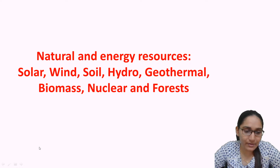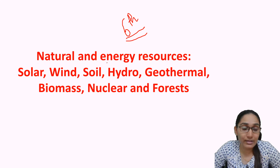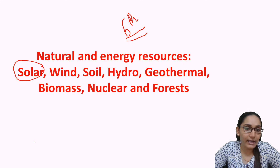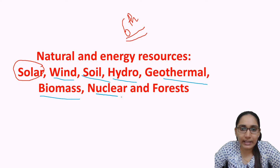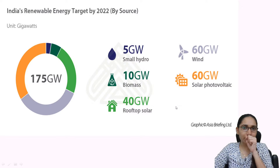The next chapter is Chapter 6 — natural and energy resources. Here we will specifically discuss solar energy, wind energy, soil, hydro, geothermal, biomass, nuclear energy, and forest. We will start with India's renewable energy target of 175 gigawatts, which is the Prime Minister's target to be achieved by 2022.